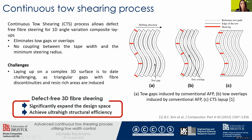Another key advantage of CTS technology is that there is no coupling between the tape width and the minimum steering radius. For AFP and ATL layups, the minimum steering radius is dependent on the tape width, and to prevent fiber buckling and straightening on the inside and outside of a curved layup, the steering radius must be kept as large as possible. Even for three-millimeter wide tapes, a minimum steering radius of about half a meter is required. Laying up on complex three-dimensional surfaces remains challenging, as triangular gaps with fiber discontinuities and resin-rich areas are induced.